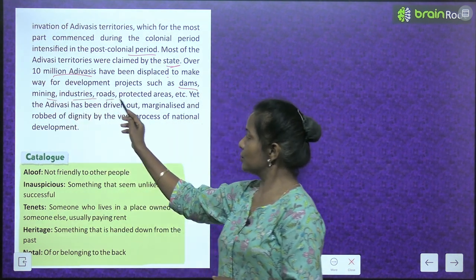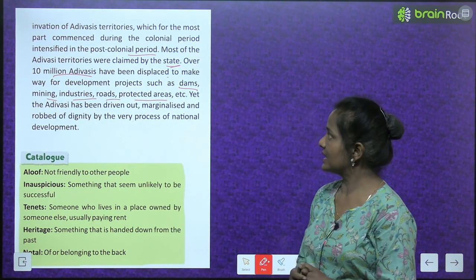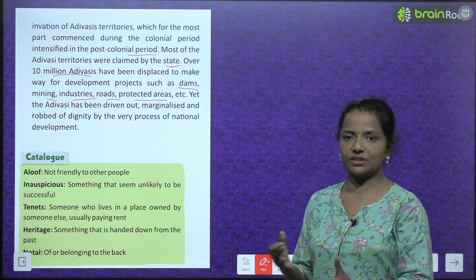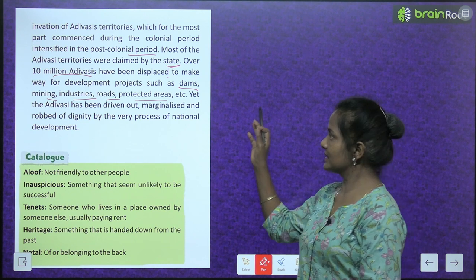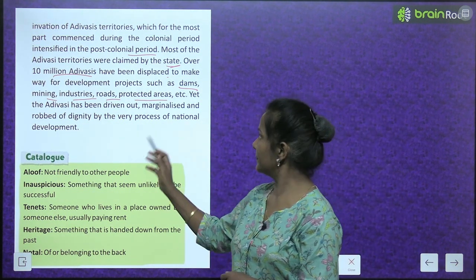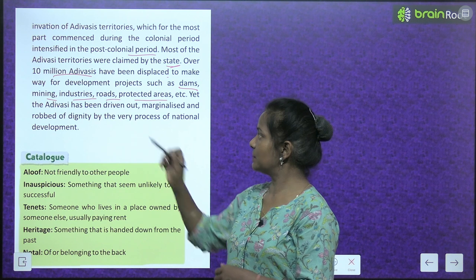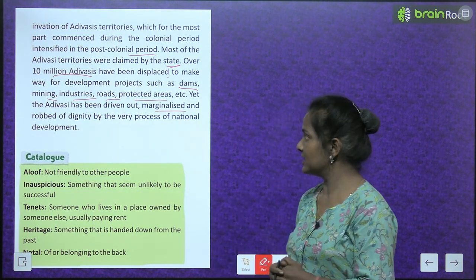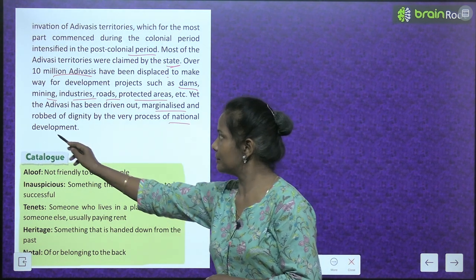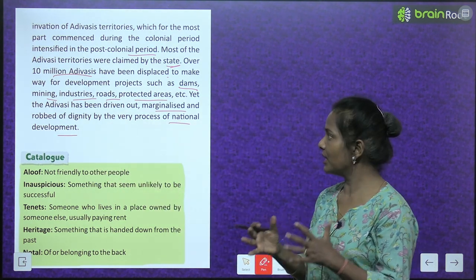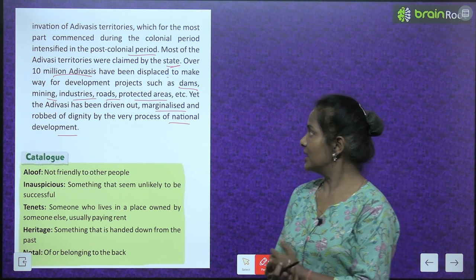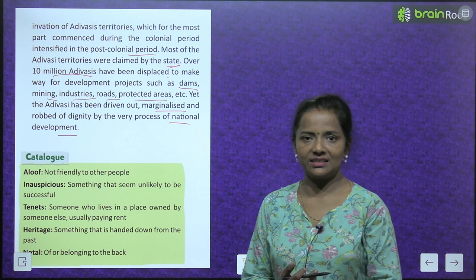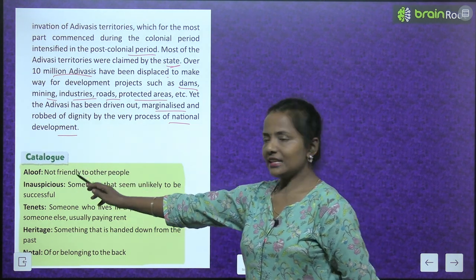Over 10 million Adivasis have been displaced to make way for development projects such as dams, mining, industries, roads, and protected areas. Thus, Adivasi has been driven out, marginalized and robbed of dignity by the very process of national development.